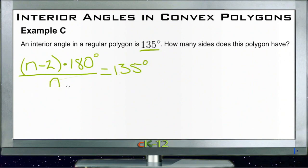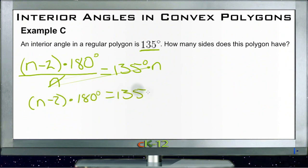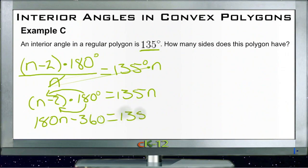We multiply both sides by n, giving us n minus 2 times 180 equals 135n. Distributing 180, we get 180n minus 360 equals 135n. We have more n's on the left side, so we subtract 135n from both sides to collect the n terms on one side.